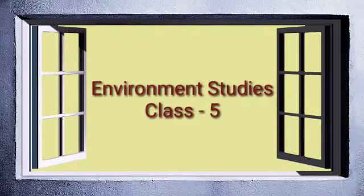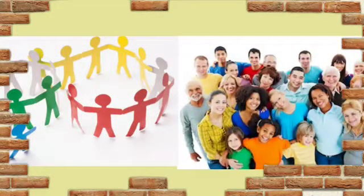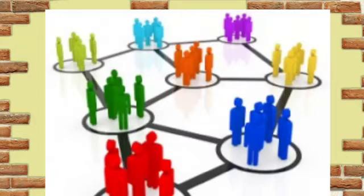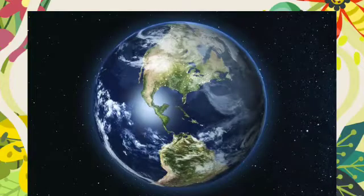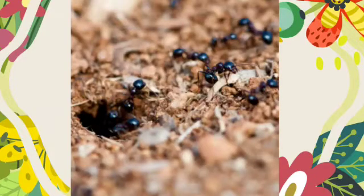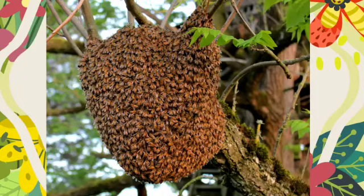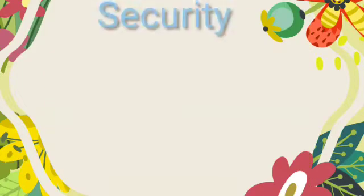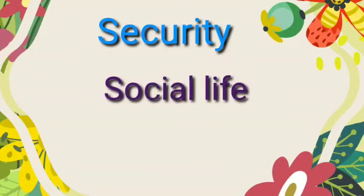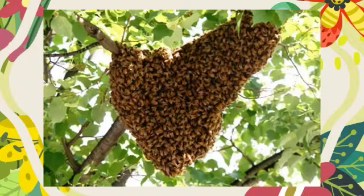Environment Studies, Class 5, Lesson 16: Community and Comfort. Dear students, you have come to know that a human is a social animal and lives in groups for better livelihood. But there are some other insects on our planet which also live in colonies — for example, ants, termites, wasps, and honey bees. These organisms enjoy security, social life, and facilities while residing in colonies. Today let's talk about honeybees.